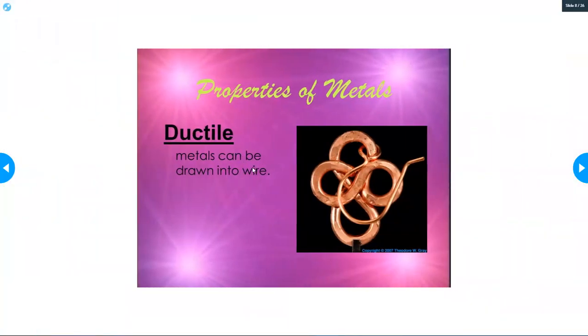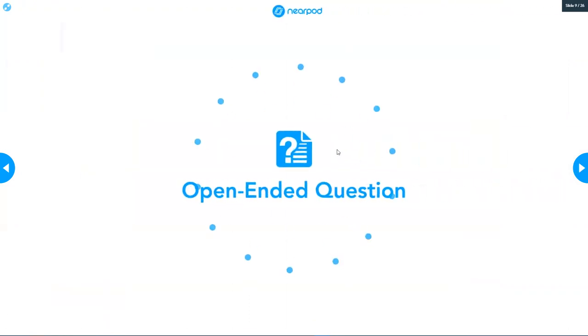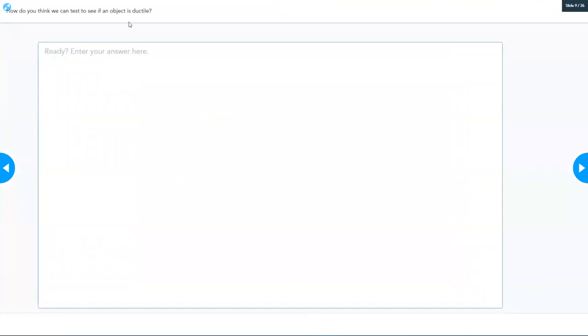Properties of metals: ductile. Metal can be drawn into wire. So you can actually shape metal into wire - that's what ductile means. So how do you think that we might be able to test to see if an object is ductile? How would you see if an object can be shaped into wire? You're going to answer that and hit submit.